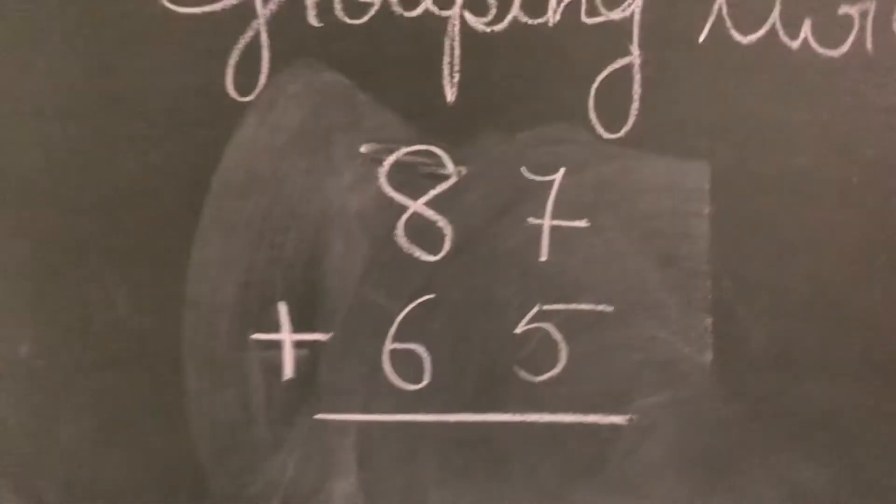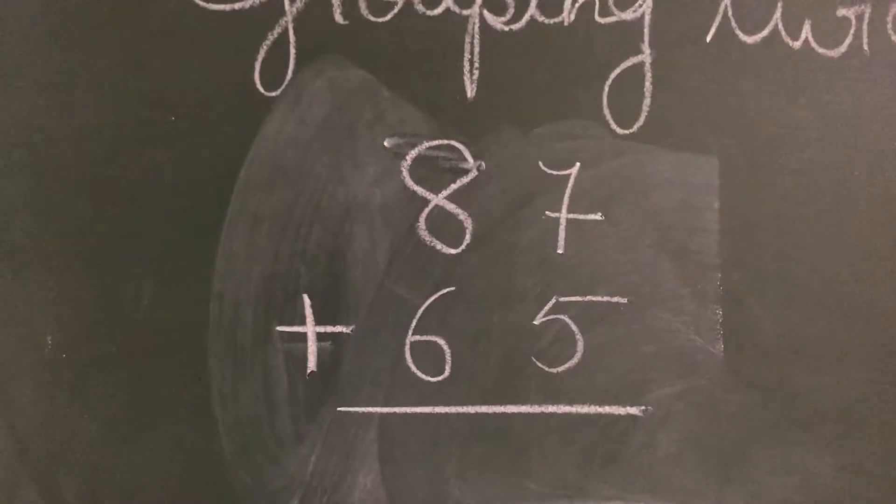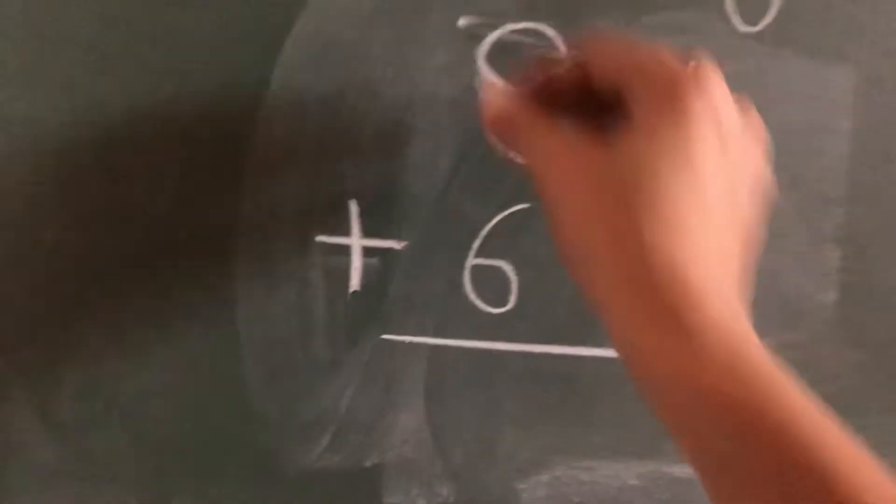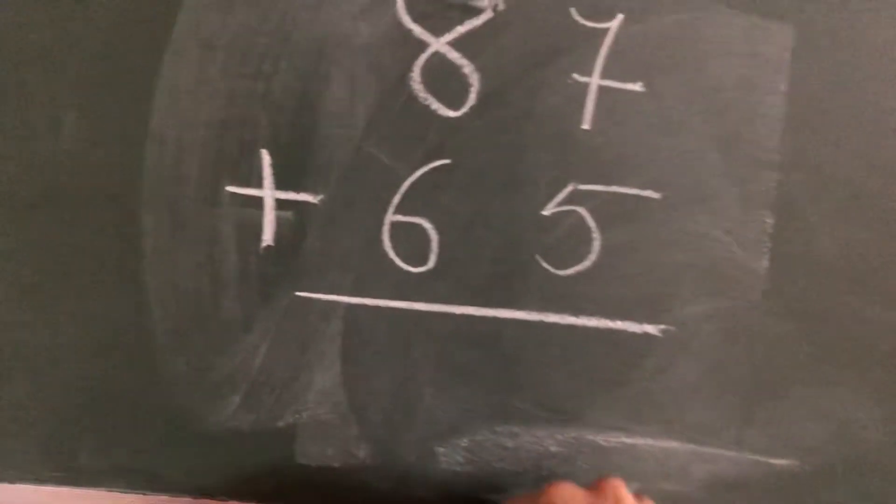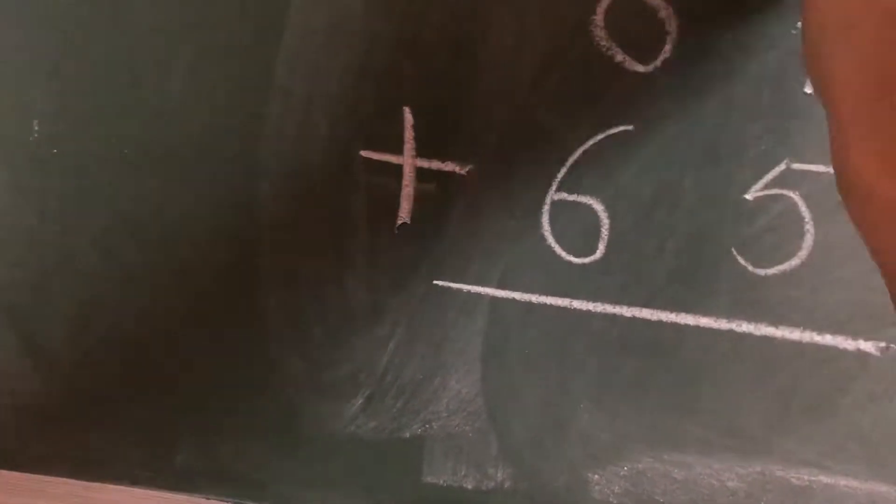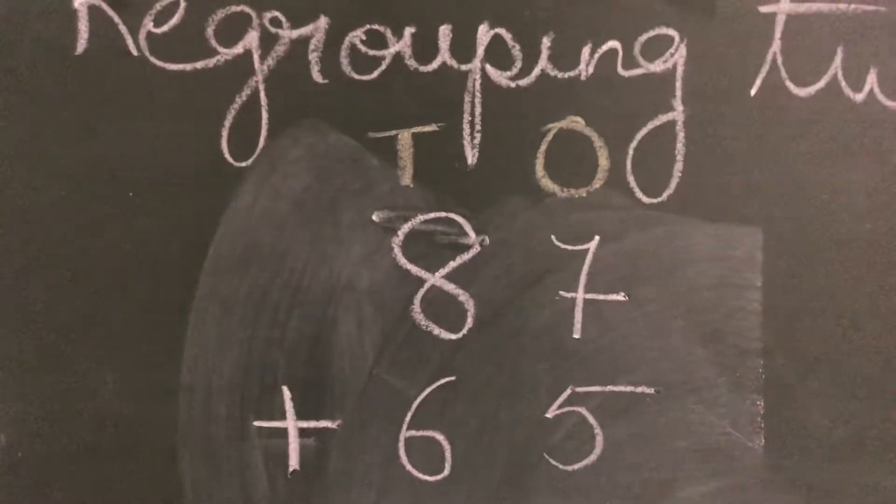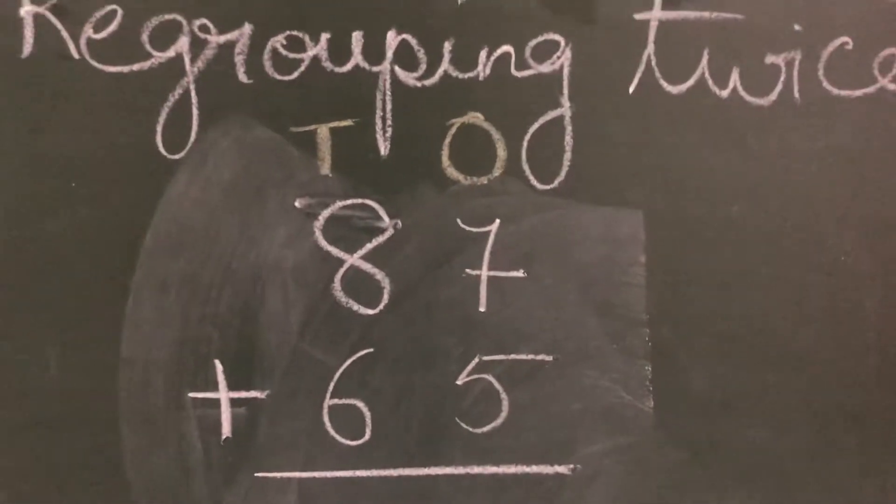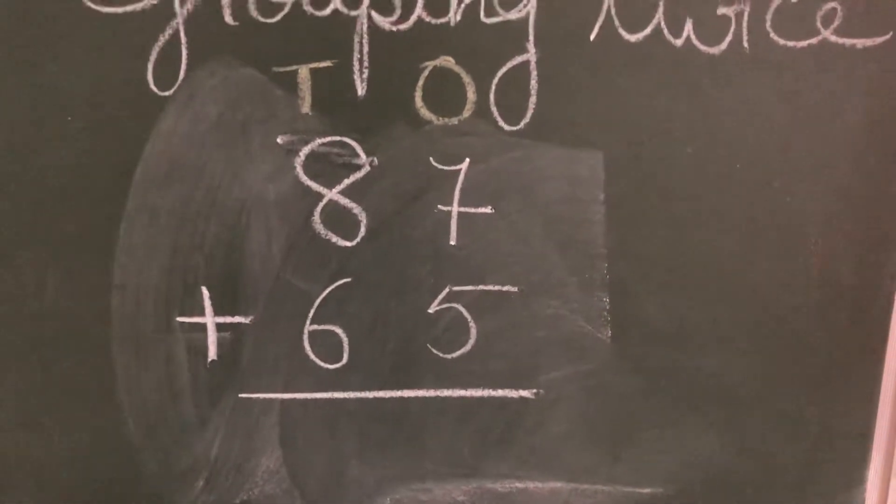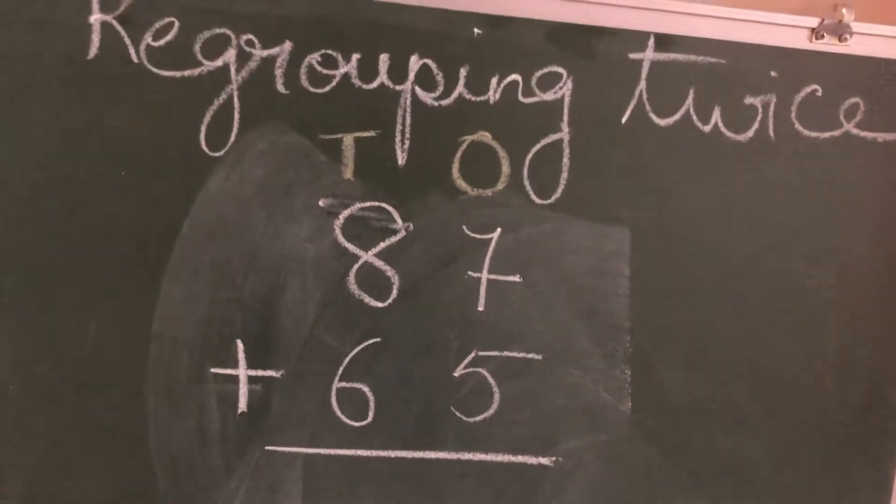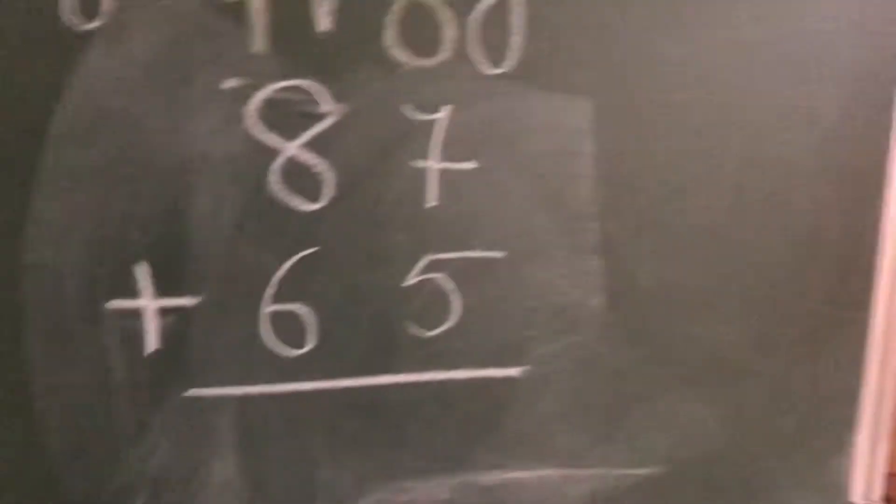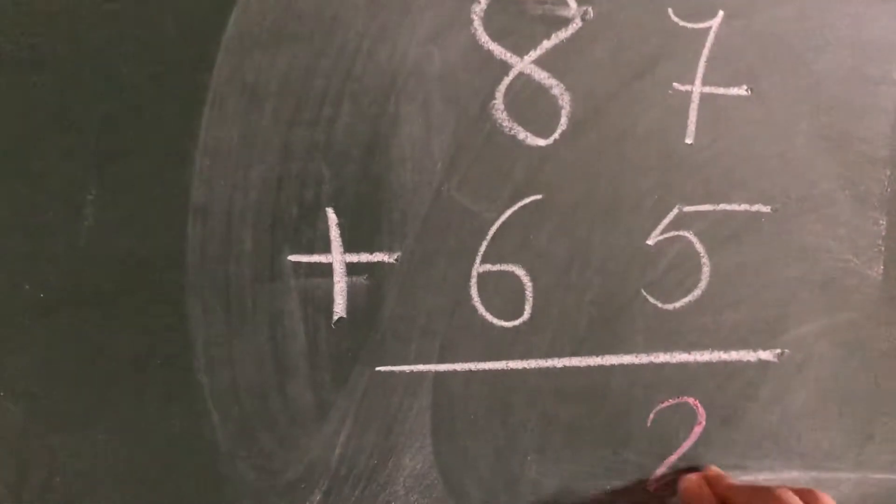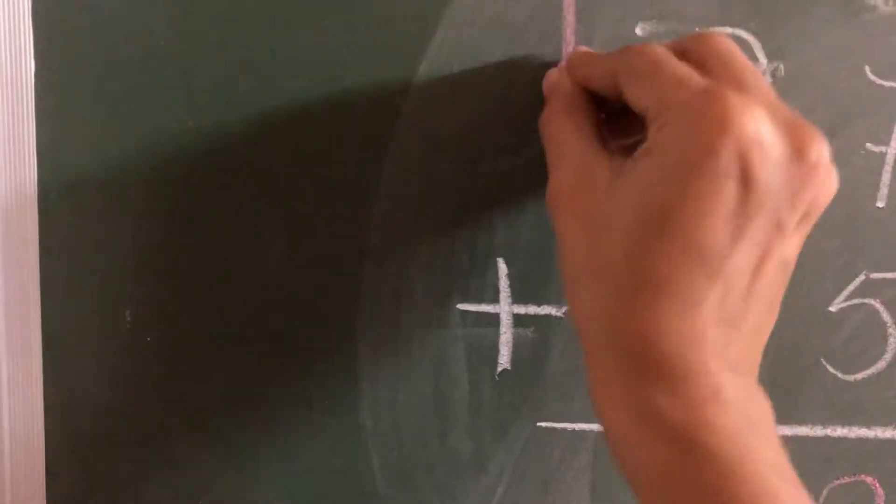Now see, I have two bigger numbers: 87 and 65. First, as we used to do, we will do regrouping for the ones place. Let me write tens and ones. First in ones place we will do regrouping. 7 plus 5 is, take out your fingers, 7 in your mind, 5 fingers out, after 7: 8, 9, 10, 11, and 12.